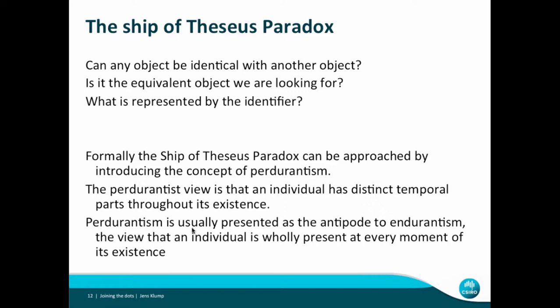As an aside to the Ship of Theseus paradox, this can be formally approached by introducing the concept of perdurantism. The perdurantists say that an individual has distinct temporal parts throughout its existence — the Ship of Theseus at any given year has its distinct temporal existence, and over time it is identical with itself. This is the antipode to endurantism, where an individual is wholly present at every moment of its existence. The perdurantist view is more pragmatic, but I'll leave that to the philosophers.